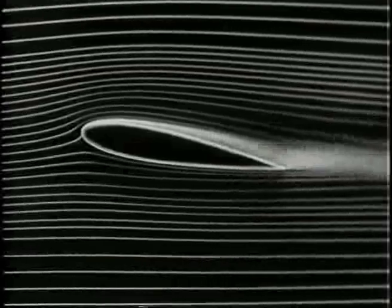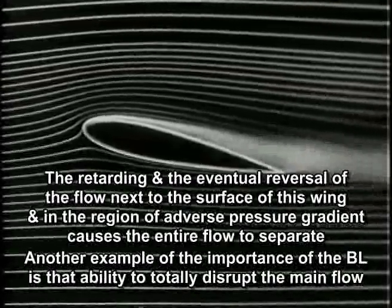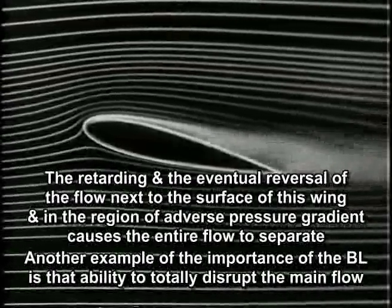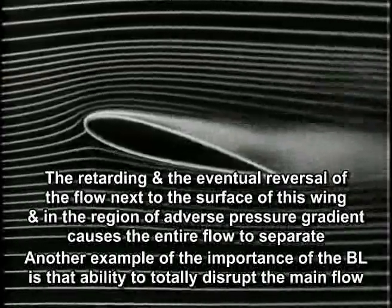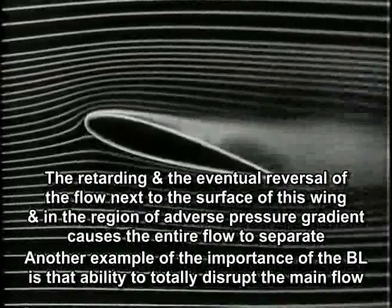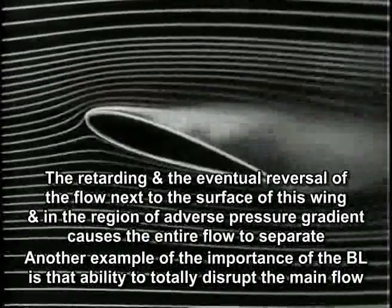Another example of the importance of the boundary layer is its ability to totally disrupt the main flow. The retarding and eventual reversal of the flow next to the surface of this wing in a region of adverse pressure gradient causes the entire flow to separate.